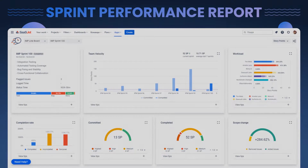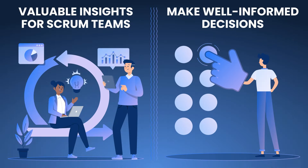Introducing the Sprint Performance Report, a powerful feature in the Time in Status for Jira add-on. This feature provides scrum teams with valuable insights into sprint activities and data, helping make well-informed decisions.